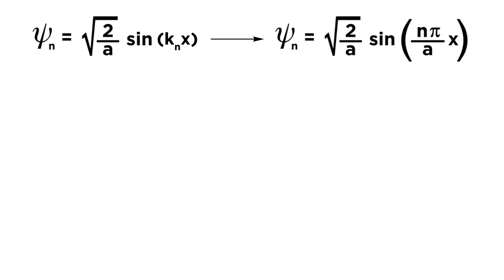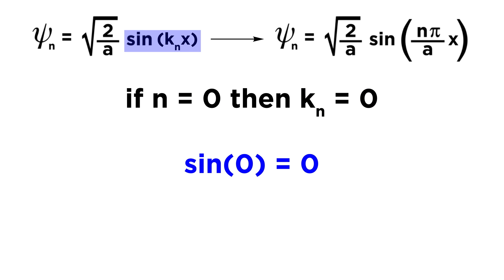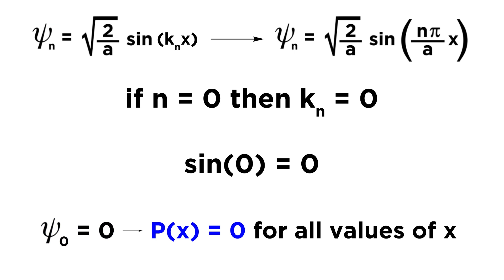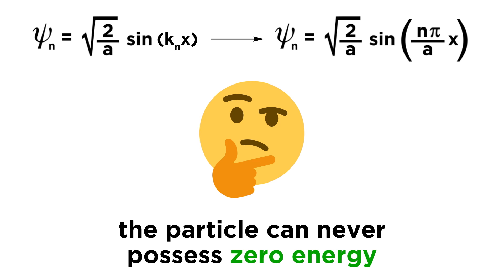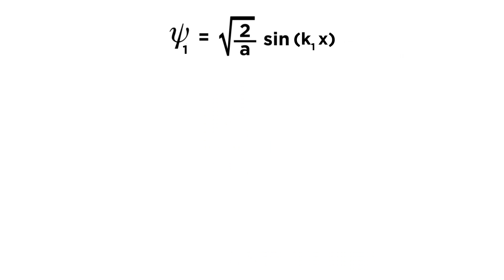There is actually another way we can prove to ourselves that n can't be zero. Let's return to our generalized expression for psi. If n equals zero, then k sub n equals zero, and we are taking the sine of zero, which is zero. That means psi sub zero equals zero, and the corresponding probability density function would equal zero everywhere inside the well, and the particle therefore does not exist. So in order for the particle to exist at all, it can never possess zero energy. This is a fascinating aspect of quantum mechanics that is in stark contrast with classical mechanics, and it is important to internalize this strange fact as thoroughly as possible, even if it seems to defy common sense.